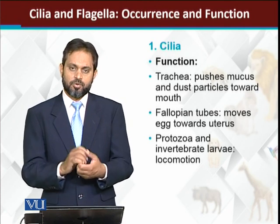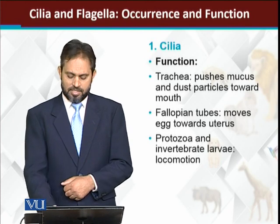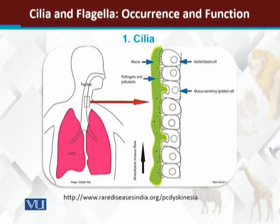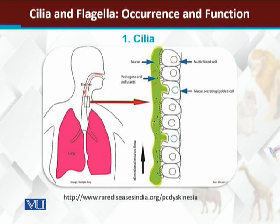Animal locomotion is basically due to cilia. In the trachea, the nasal passage of air means that particles entering the windpipe will be completely trapped by the mucus, and the cilia will act as a filtration system.